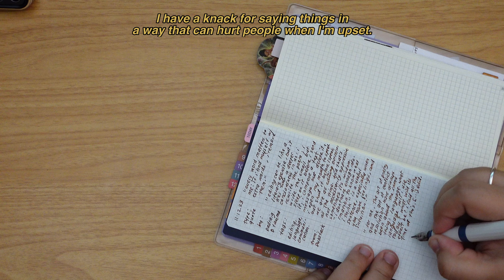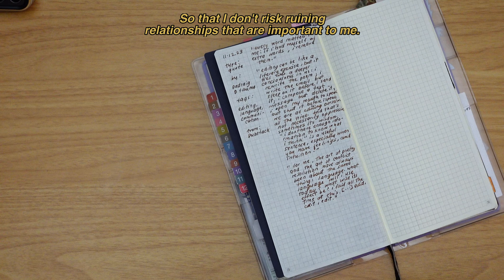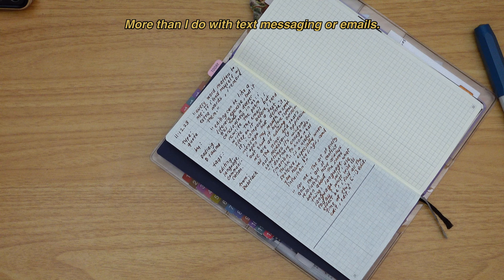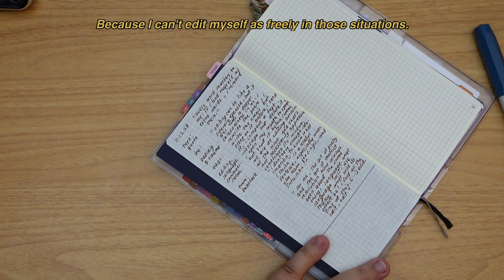I have a knack for saying things in a way that can hurt people when I'm upset, and so I try to avoid speaking when I'm angry so that I don't risk ruining relationships that are important to me. But then on the opposite spectrum, I struggle with things like in-person meetings or voice calls more than I do with text messaging or emails because I can't edit myself as freely in those situations. And that terrifies me.